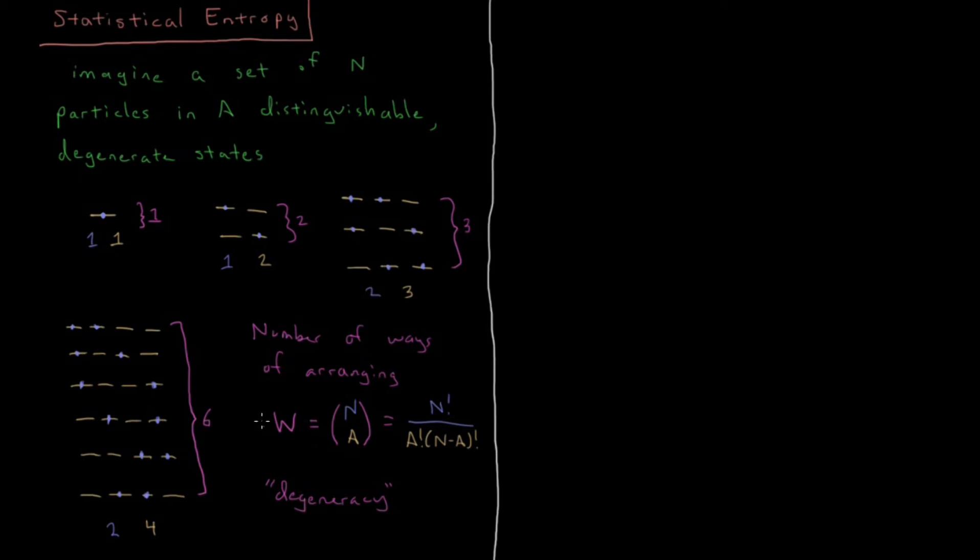So if we know what W is, we know our degeneracy factor for the system, what is the entropy for this system? The entropy, and this is absolute entropy, is going to be the Boltzmann constant times the natural log of the degeneracy. And this is the formula for statistical entropy of degenerate states. And this is pretty much a fundamental relationship in statistical mechanics and also thermodynamics.